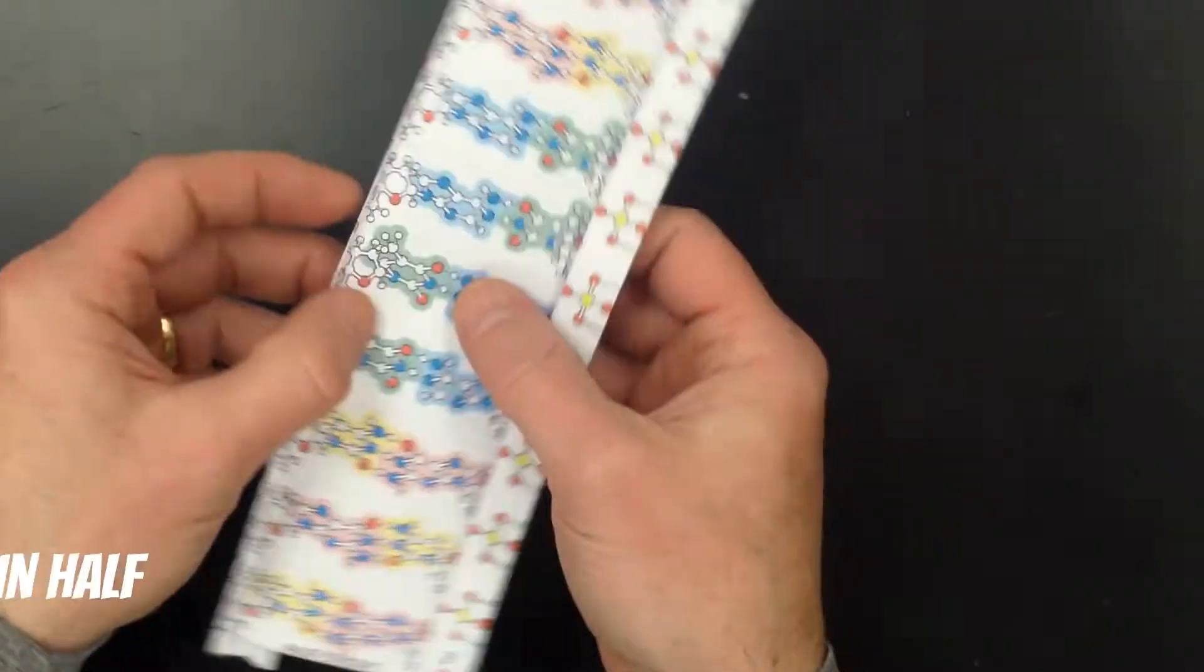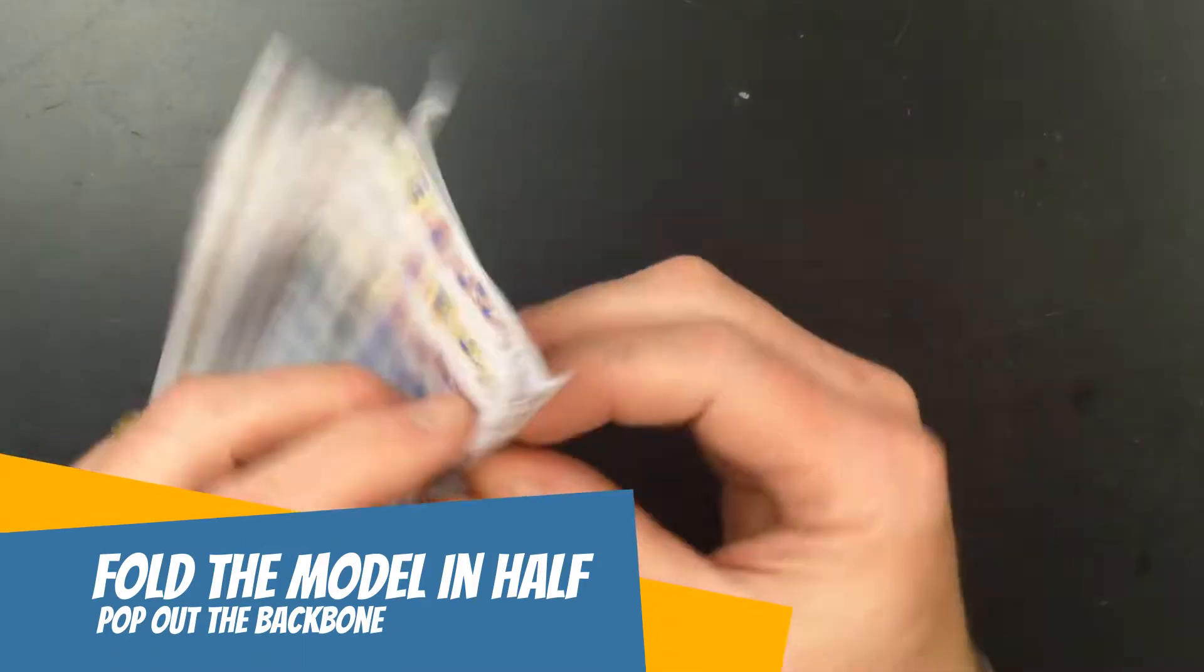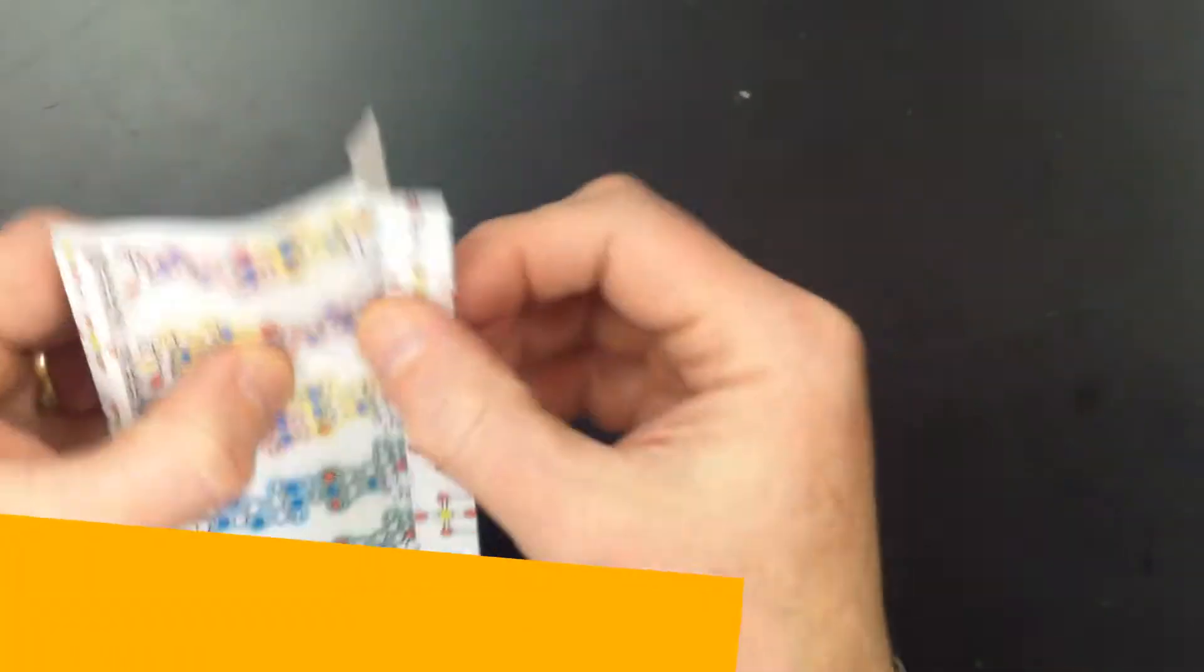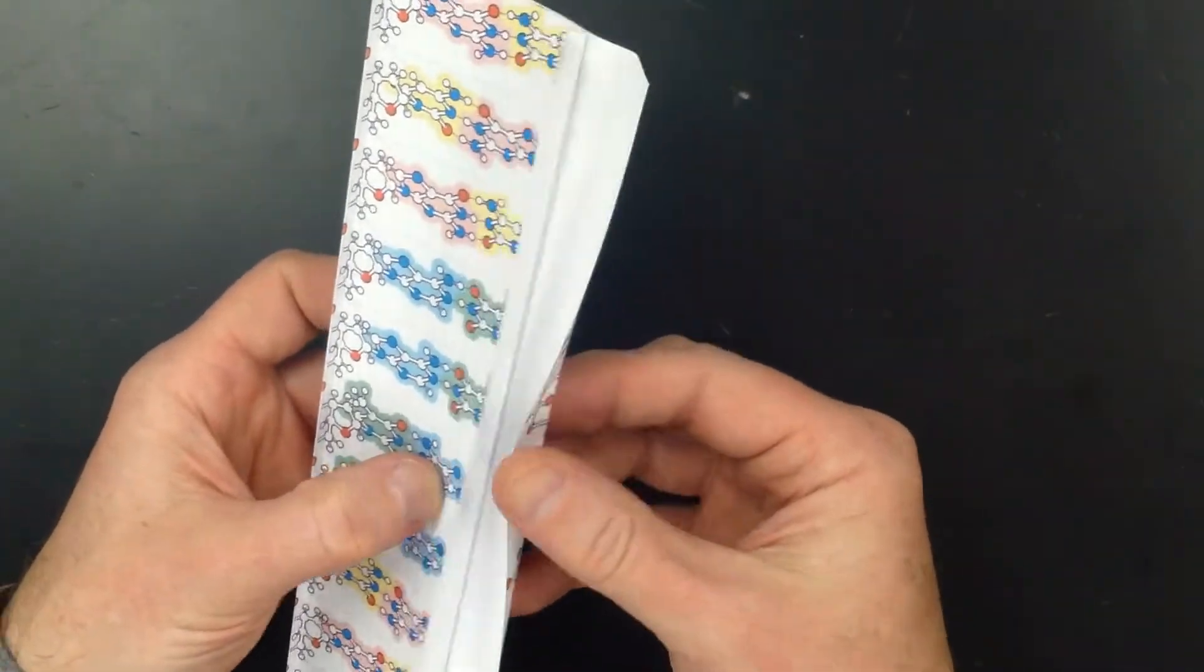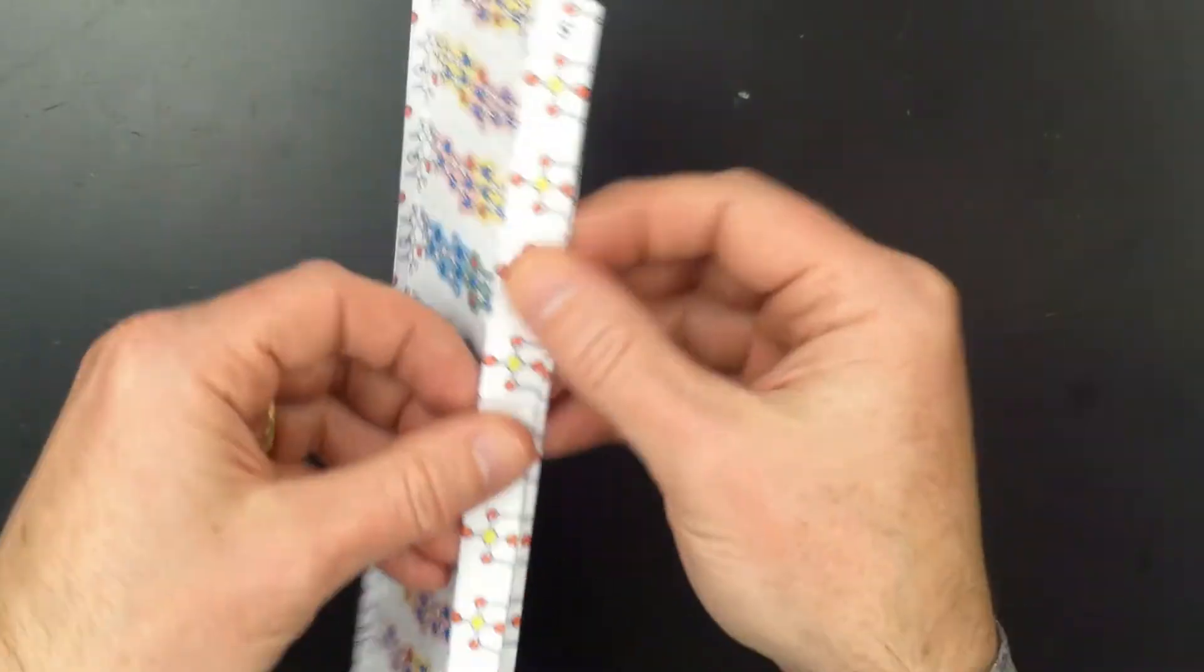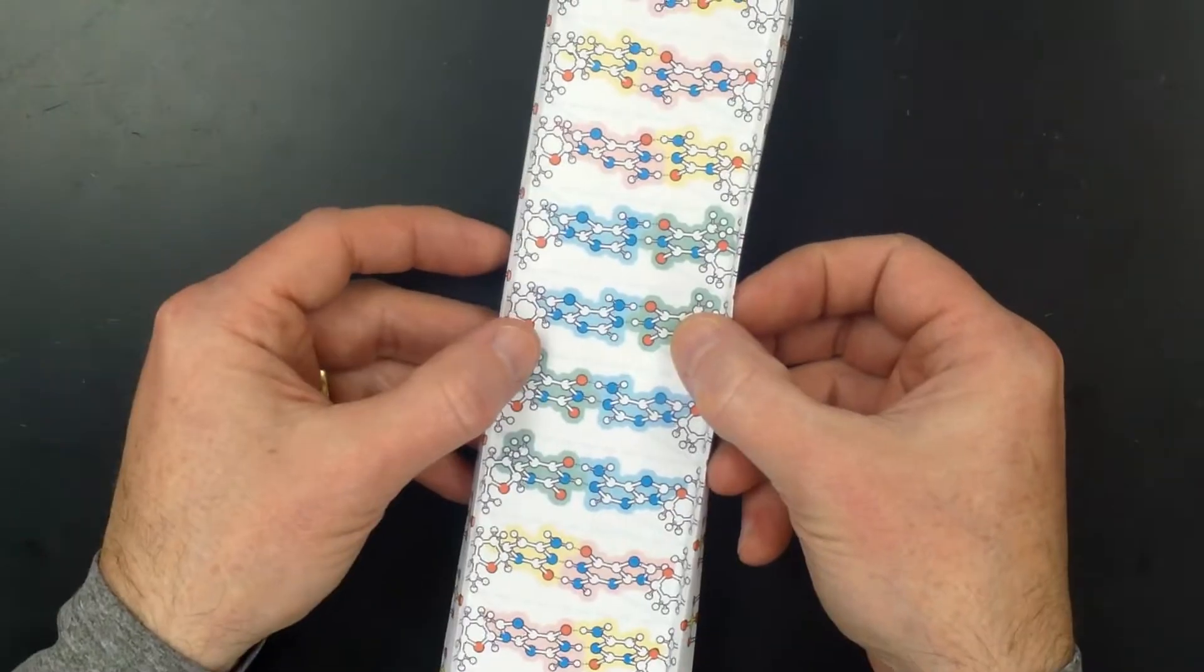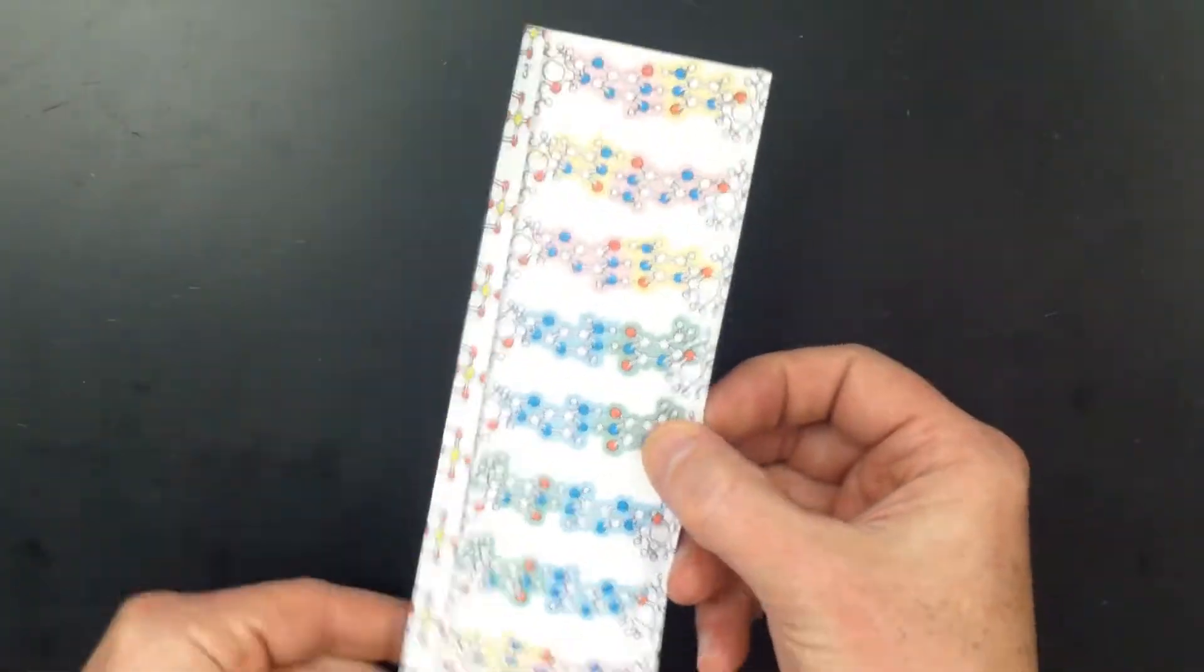The next step is to fold the paper in half and pop out the backbone on the folded half of the sheet. On the other side you can tuck the backbone flaps into each other. I found it helpful to use a few small pieces of tape to hold the model together.